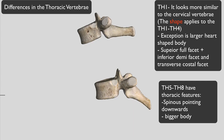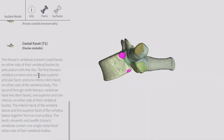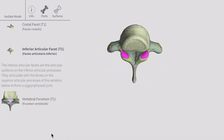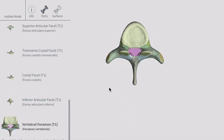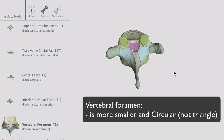The differences in thoracic vertebrae: T1 looks more similar to the cervical vertebra, whereas the lower thoracic vertebra looks more like a lumbar vertebra. The vertebral foramen is smaller and circular — not triangular — so that's a key piece of information to note.